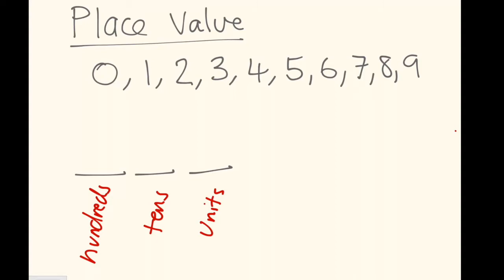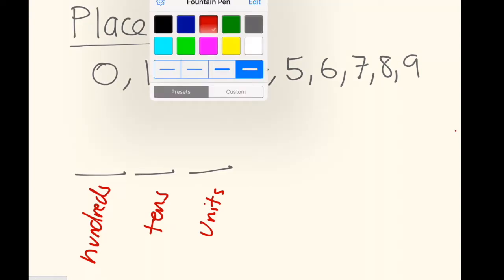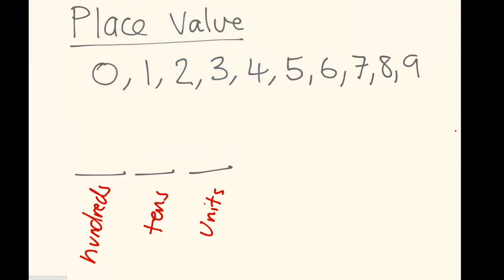And I could keep going to thousands, ten thousands, hundred thousands, millions, etc. This number could also have a decimal point in it. And I could have a certain number of numbers after the decimal point.